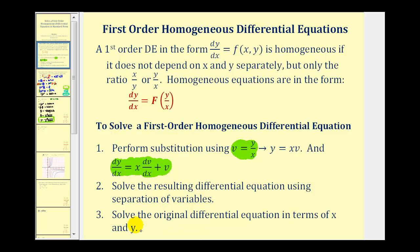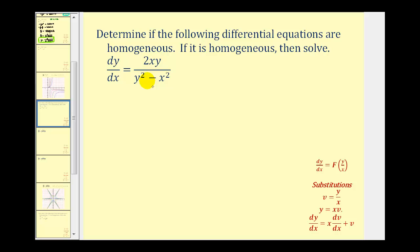So let's take a look at our second example. Our first step is to see if we can write the right side of this differential equation as a function of y divided by x. Looking at the denominator, if we have a y squared here, we need this term to be y squared divided by x squared in order to be a function of y divided by x. So we're going to multiply the denominator by one over x squared, and we must do the same to the numerator.